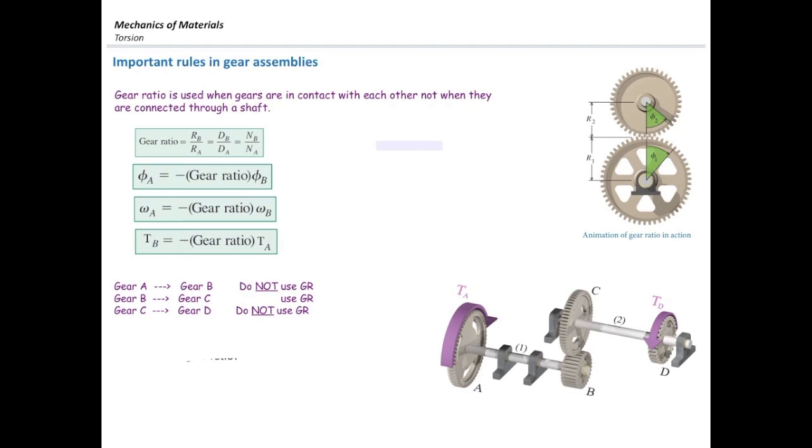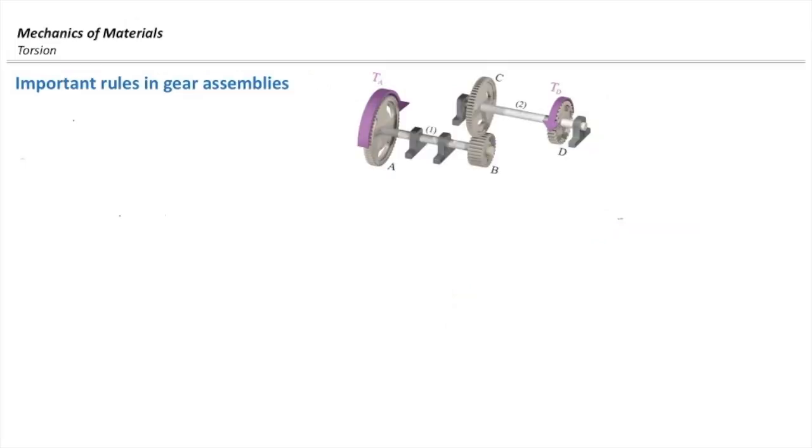We call that as gear ratio, but the question is how to use the gear ratio properly to determine the internal torques. There are five rules that we need to remember when we want to work with the gear assemblies.